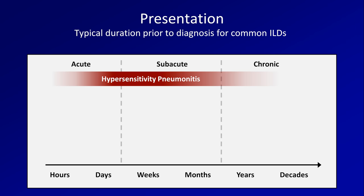Once a clinician has identified a patient as possibly having an ILD, what type of diagnostic evaluation should occur? First, a very detailed exposure history needs to be taken. This includes the patient's current and prior occupations and hobbies, asking about any potential chemical inhalations. If there may have been exposures, also ask about the use of a respirator, or if symptoms improve on weekends or while on vacation. Ask about exposure to animals, particularly birds. Ask about medications, and illicit drugs as well, such as smoking marijuana, amphetamines, or crack cocaine. And last, of course, prior radiation treatment.